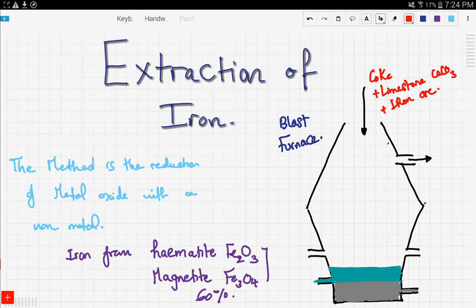The blast furnace has a temperature of 400 degrees Celsius, and this is provided through pumping hot air. The air goes into the blast furnace like this and heats up the process.